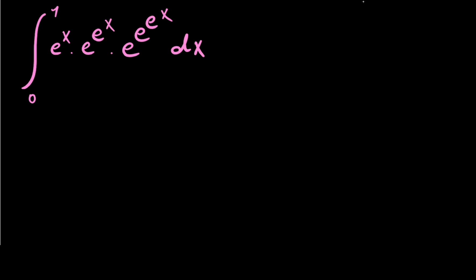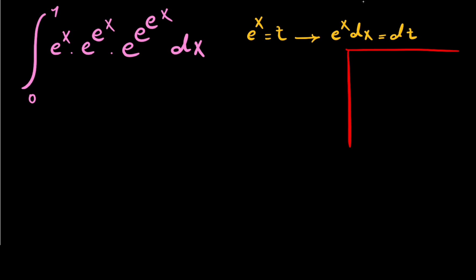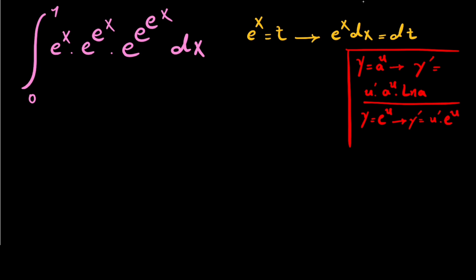If I write e to the power of x as t and differentiate, the left side gives us e to the power of x times dx equals dt. If you have y equals a to the power of u, then y prime equals u prime times a to the power of u times ln a. Since a equals e, the derivative simplifies to u prime times e to the power of u.